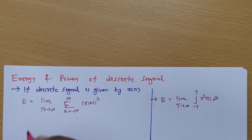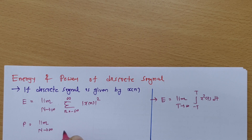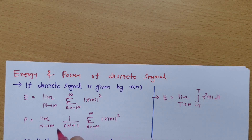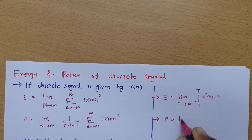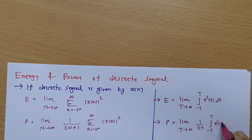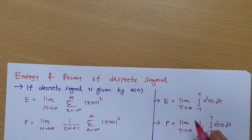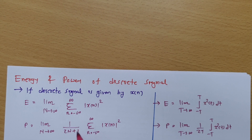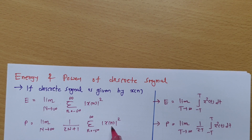For calculation of power, we can calculate power by limit n tends to infinite, 1/(2n+1), summation n varies from minus infinite to infinite, of |x(n)|². For continuous time signals, power calculation is limit t tends to infinite, 1/(2t), integration from minus t to t of x²(t) dt. For discrete time, power is limit n tends to infinite, 1/(2n+1), summation n from minus infinite to infinite, of |x(n)|².